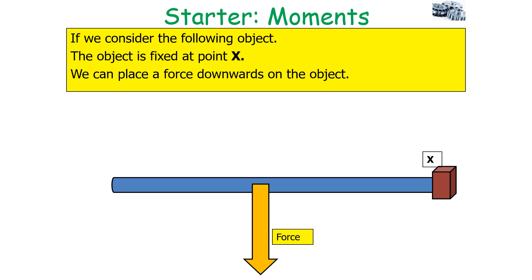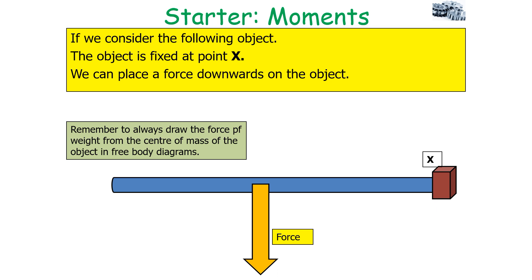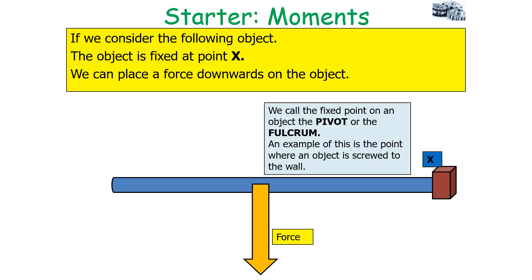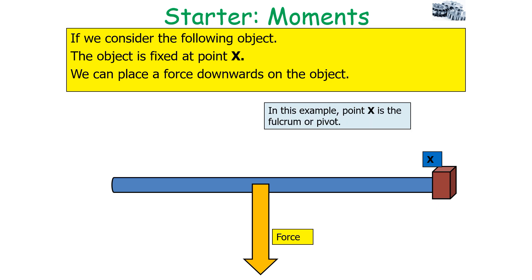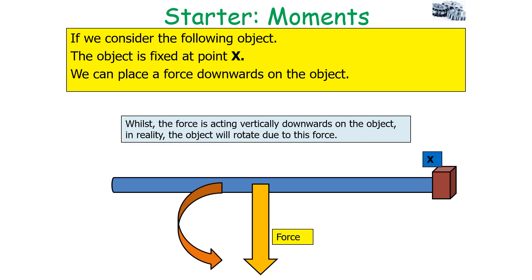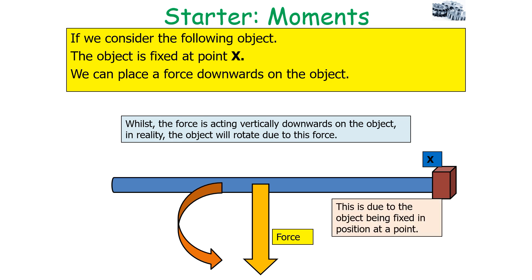Consider an object fixed at point X with a force acting downwards on it. It's always important to draw the force of weight from the centre of mass in free body diagrams. We call the fixed point on an object the pivot or fulcrum — for example, the point where an object is screwed to a wall. So point X is the fulcrum. The force acting vertically downwards is weight, but because the object is fixed at that point, the force will cause the object to rotate — it has a rotational effect.